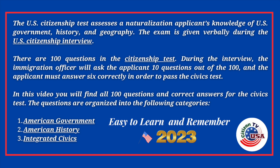The U.S. Citizenship Test assesses a naturalization applicant's knowledge of U.S. government, history, and geography. The exam is given verbally during the U.S. Citizenship Interview. There are 100 questions in the Citizenship Test. During the interview, the immigration officer will ask the applicant 10 questions out of the 100, and the applicant must answer 6 correctly in order to pass the civics test.